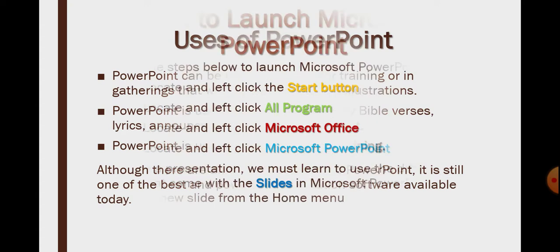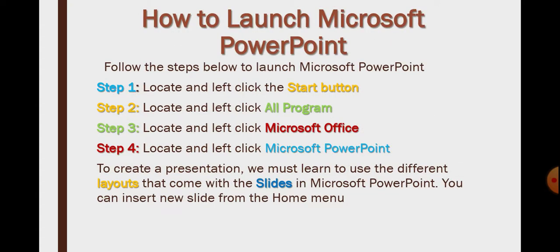How to launch Microsoft PowerPoint application. In this part, you will need to practice this on your computer system. What you do is follow the steps below. Step one: locate the start button of your computer, or the Windows key. You can always find the Windows key on your keyboard or at the bottom left of your screen. Click the Windows or start button, or press the key on your keyboard. It will pop up a box that contains all programs. Locate and left-click all programs.